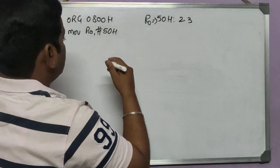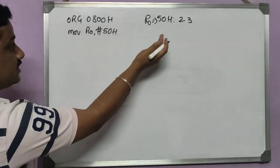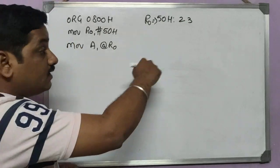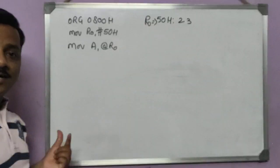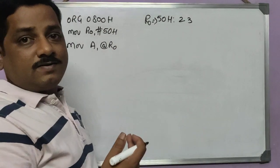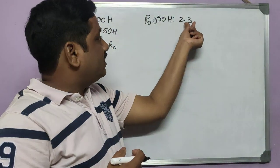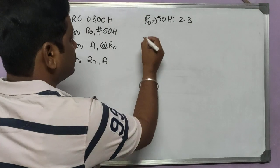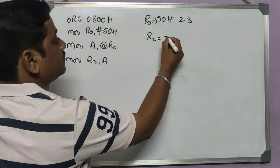Next, I load the input into the accumulator: MOV A, @R0 — since R0 is 50H, the accumulator gets the value 23H. Before converting, I also temporarily store this input into R2 using MOV R2, A. So R2 also holds 23H. This is important because after converting the lower nibble, I will need to recall the original value to process the upper nibble.